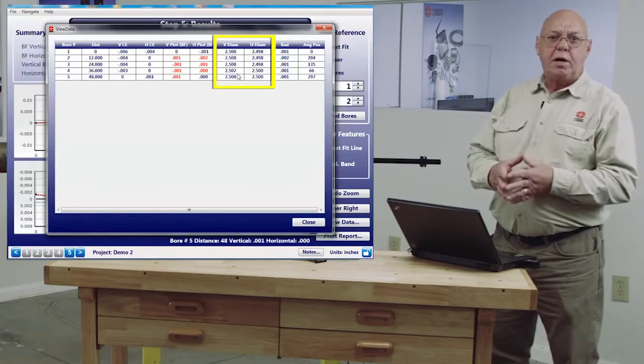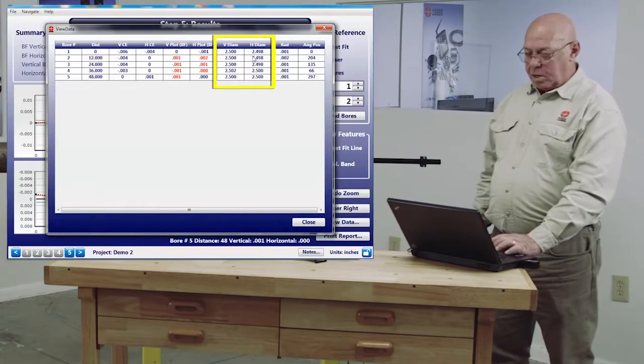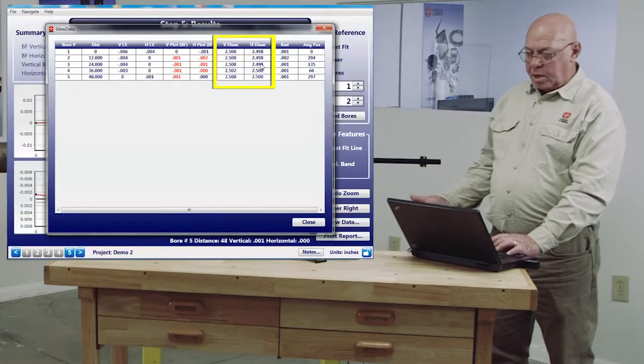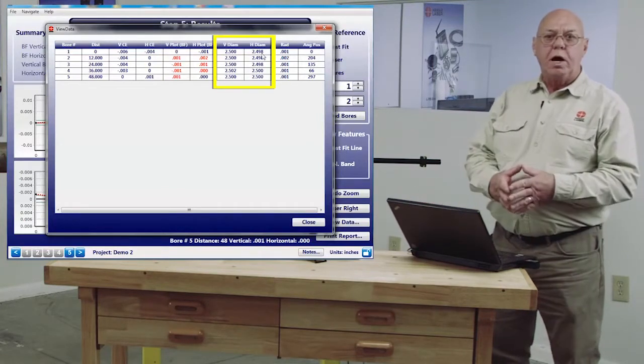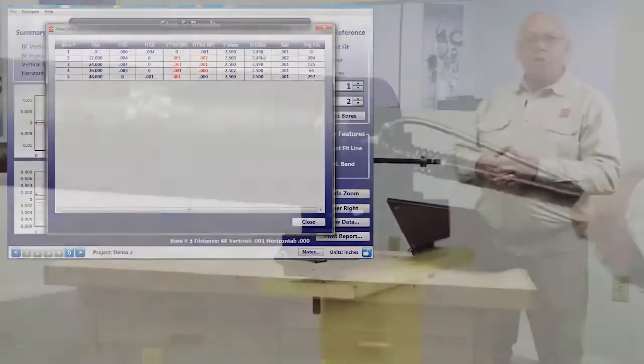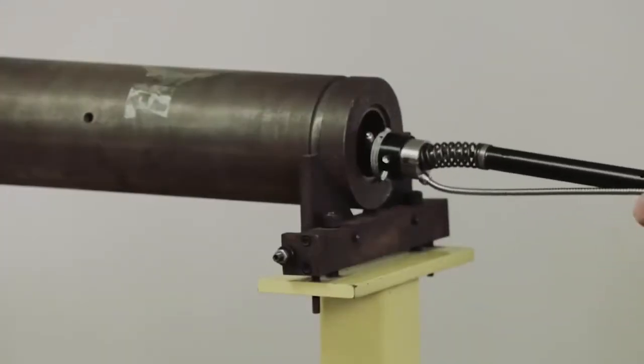So in the same way horizontally, if you look, everything is within two thousandths. So that's pretty much the way you take bore wear measurements using this system.